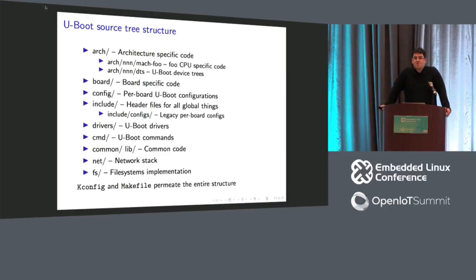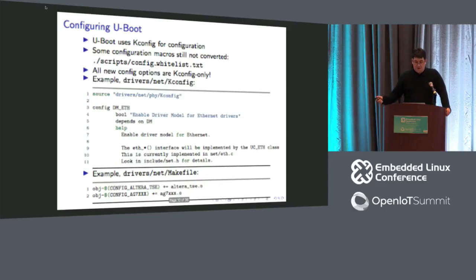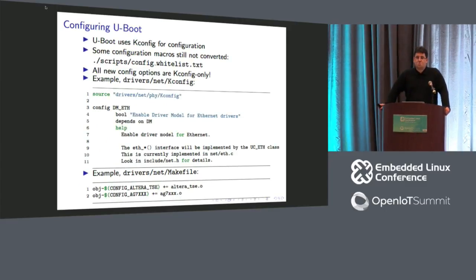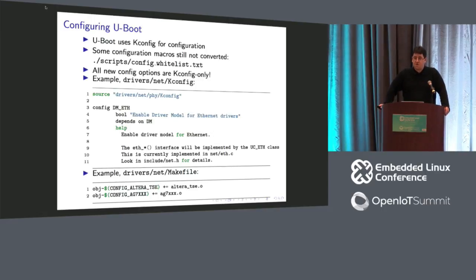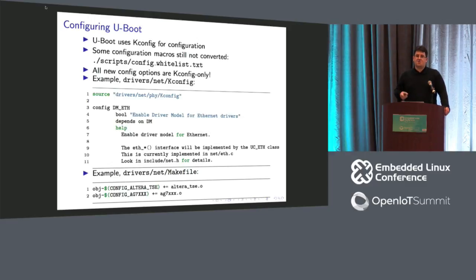U-Boot shell command implementations are in cmd nowadays. Common code is in common/lib, networking stack in net, and filesystem code in fs. U-Boot is migrating toward kconfig and kbuild — there are still some unconverted config options in include/configs, but any new U-Boot config options must be kconfig only. You can verify whether an option has been converted by checking a specific file.